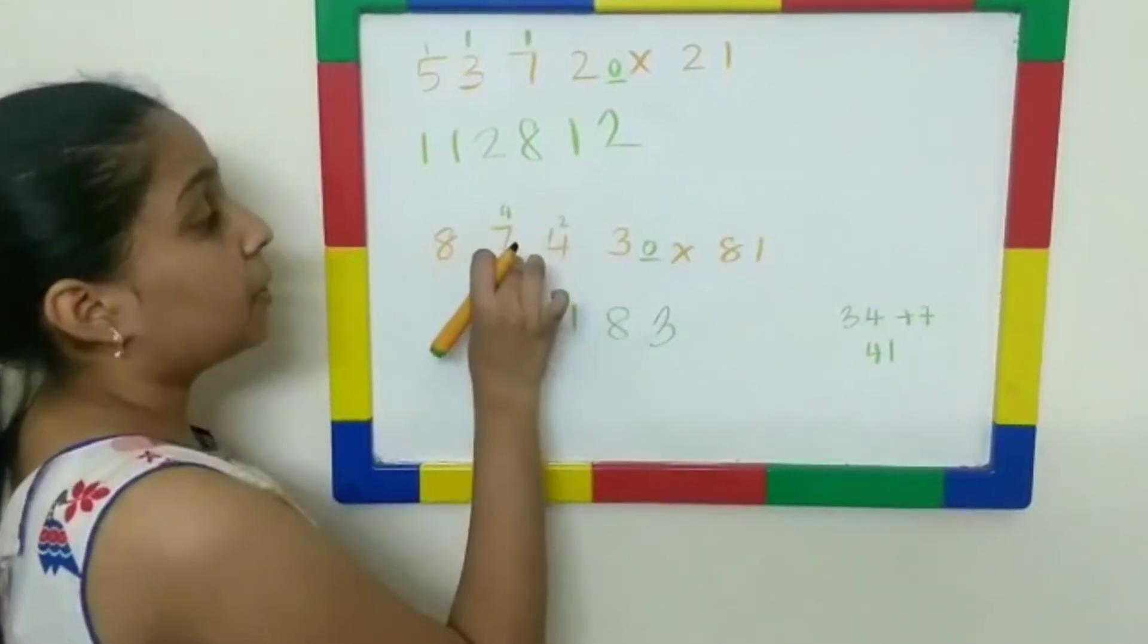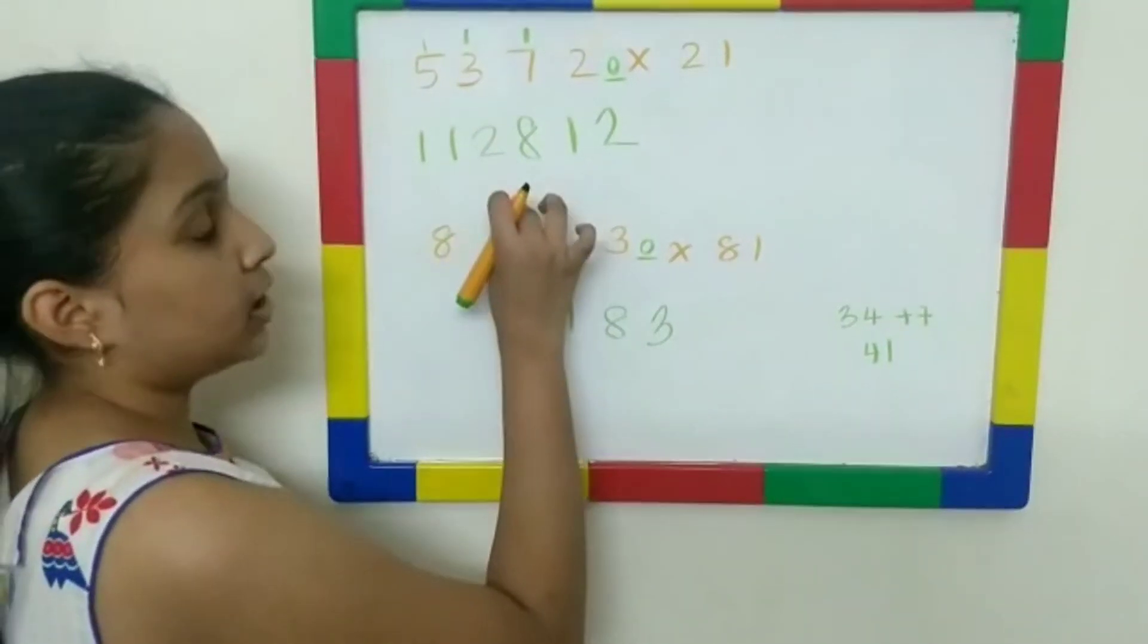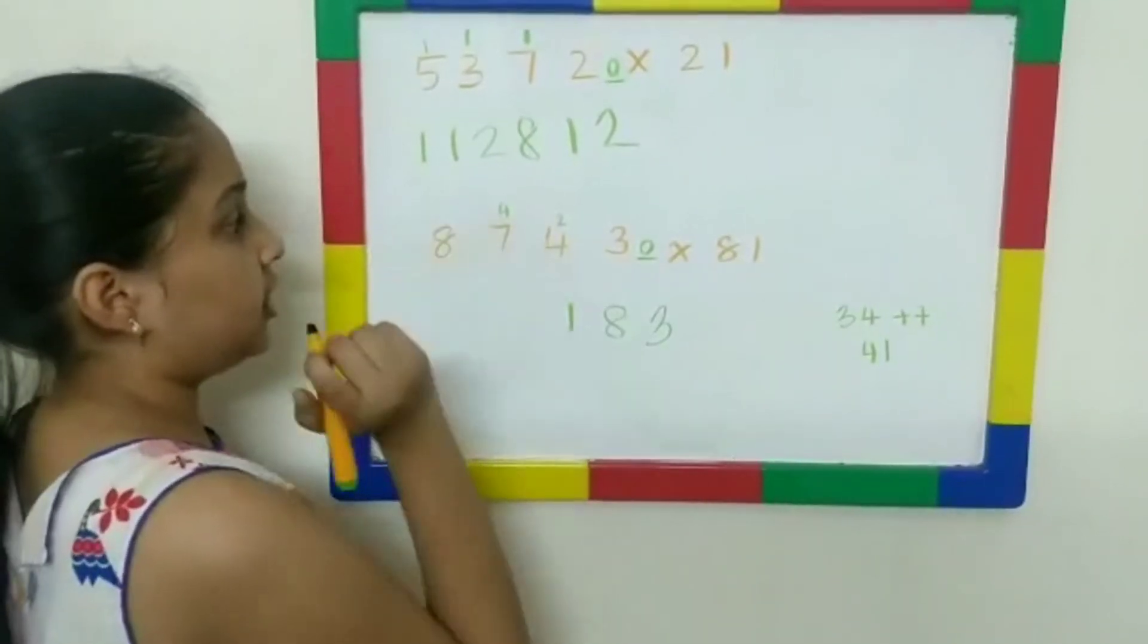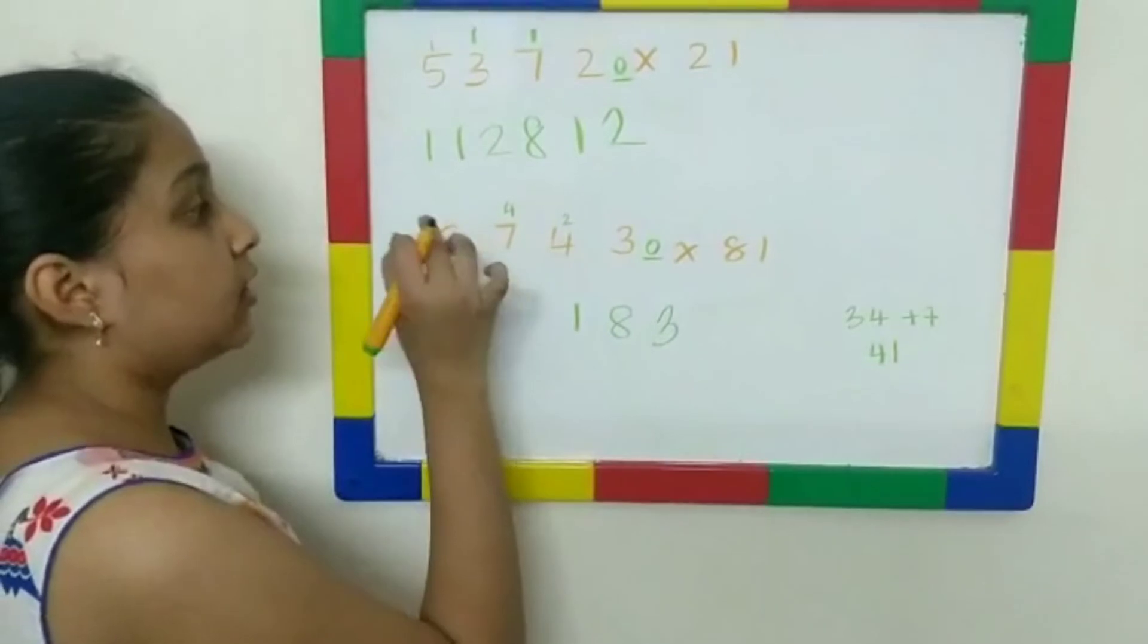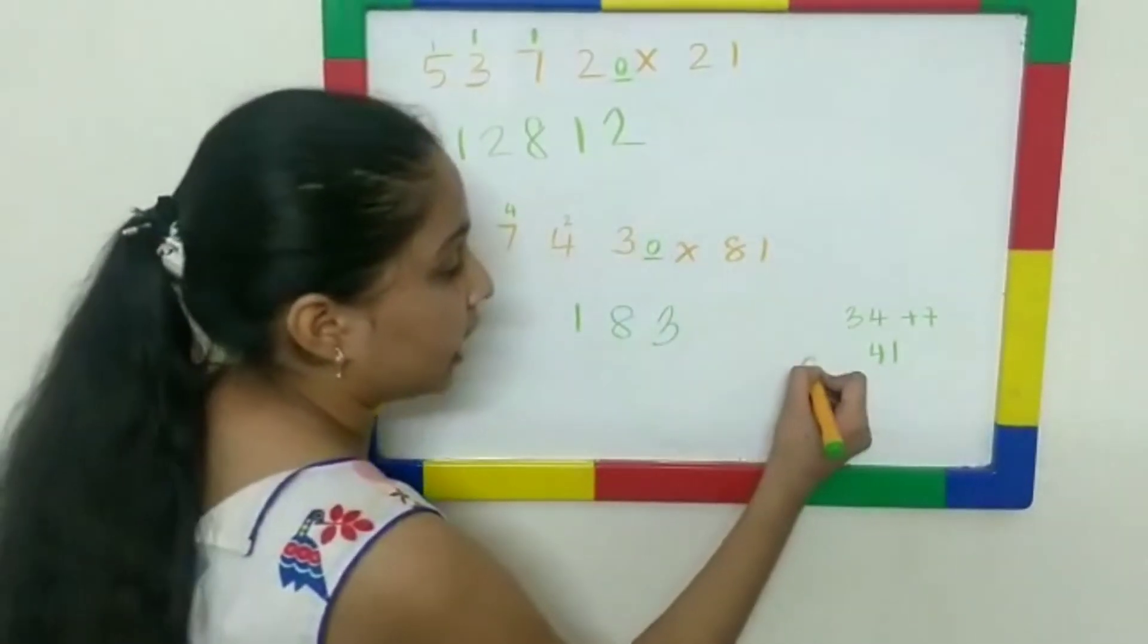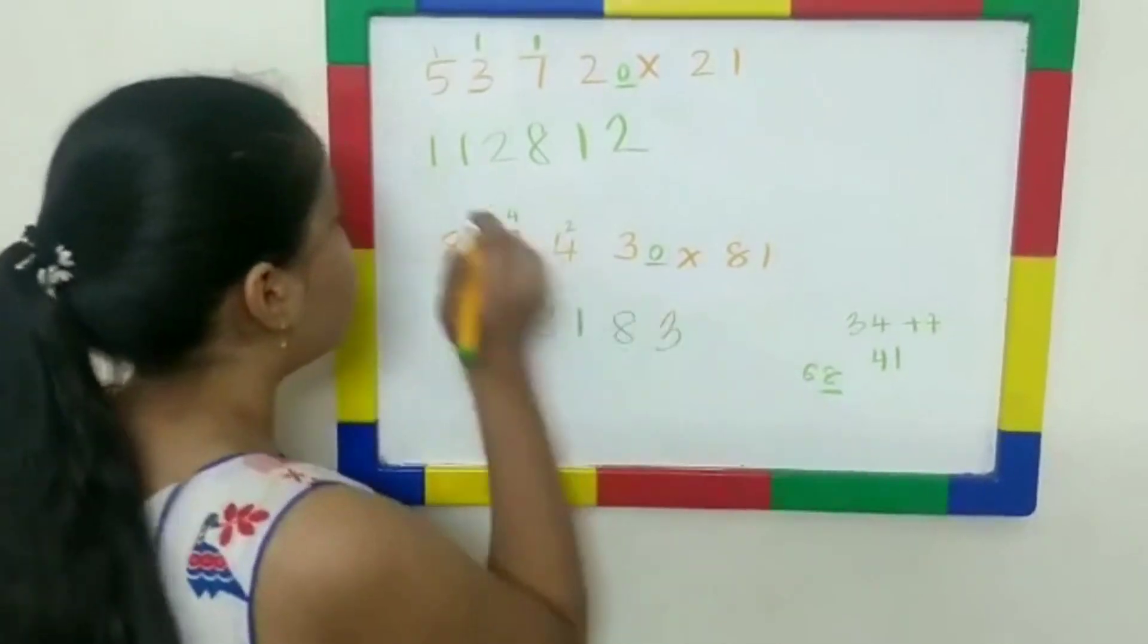8 multiplied by 7, which is 56. 56 plus 4 gives 60. 60. 60 plus 8. 60 plus 8 gives 68. So, 68. So, 8 goes on the bottom and 6 goes on the top here.